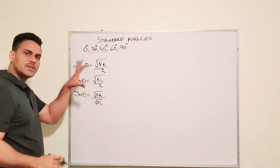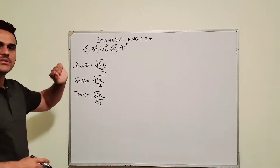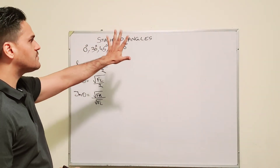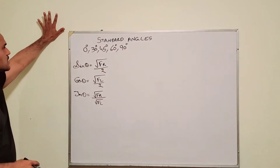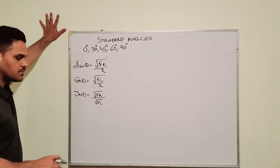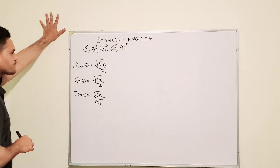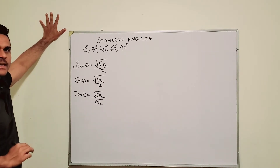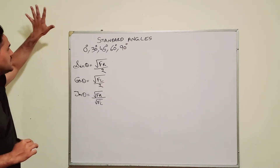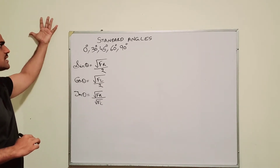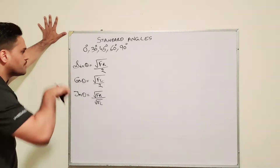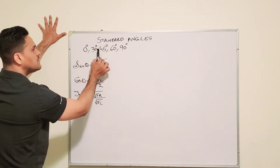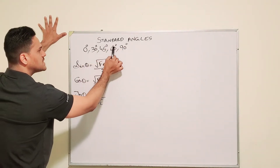Now I'm going to explain this. I want you to raise your left hand and put it on the wall, or you can put it on the table in front of you. We need to make sure it always has to be our left hand and we need to put it down like that — not like that, down like that. So our standard angles are 0, 30, 45, 60 and 90.